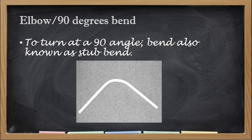It is used to turn at a 90-degree angle. The bend is also known as the stub bend because a 90-degree bend has two parts: the stub is the shorter part of the conduit, and the longer side is called the tail. The elbow or 90-degree bend is used to turn conduits at a 90-degree angle, especially when the bend is coming from the floor and we want the run to go up the wall.